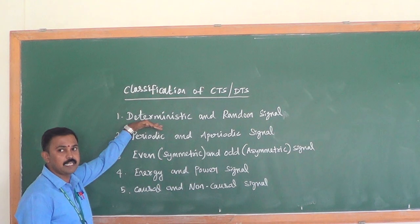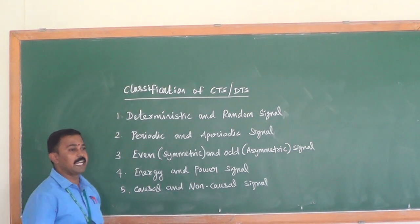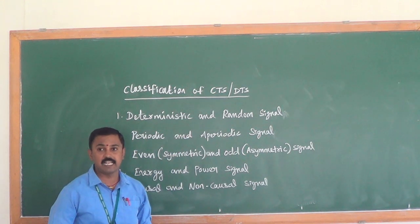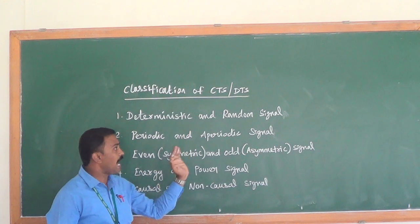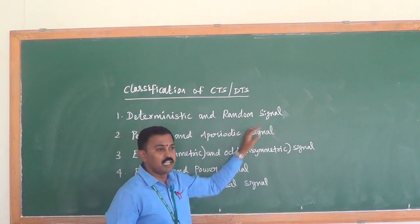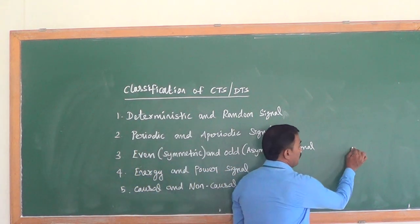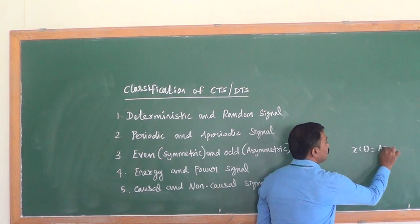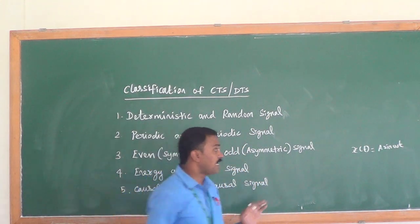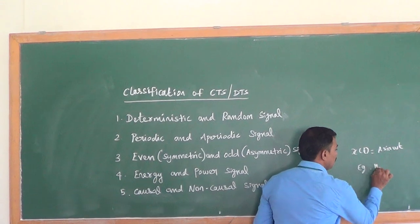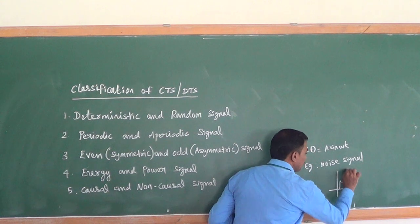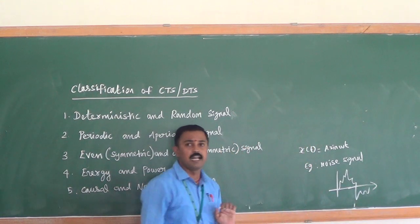First, let's look at the deterministic and random signal. What is deterministic? A signal that can be represented by any mathematical equation is called a deterministic signal. For example, x(t) = A·sin(ωt) — that is a mathematical expression, so it is a deterministic signal. A random signal does not represent any mathematical equation. An example of a random signal is a noisy signal, which cannot be represented by a mathematical equation.